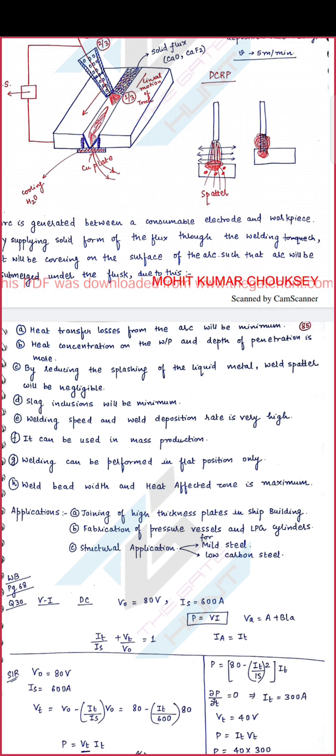This process is used for joining high-thickness plates in shipbuilding, and for fabrication of pressure vessels and LPG cylinders. Generally, LPG cylinders are welded using this Submerged Arc Welding process.